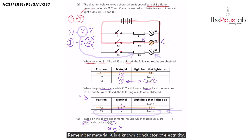Remember, material X is a known conductor of electricity. So why didn't bulb B3 light up? The issue must be with the bulb. Bulb B3 must have fused, preventing it from lighting up. Mystery solved.